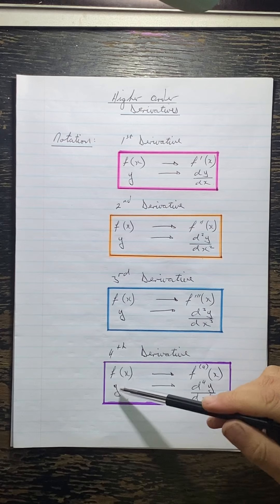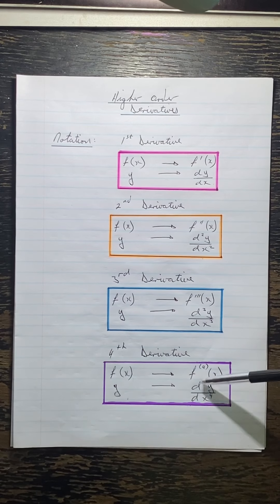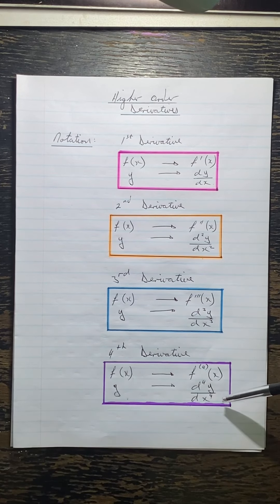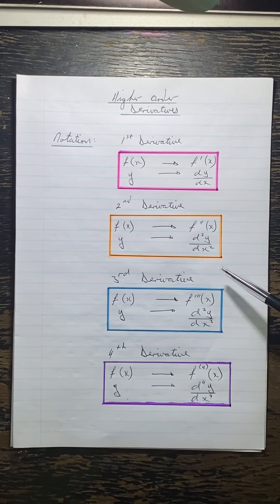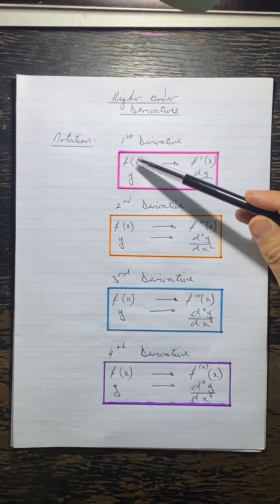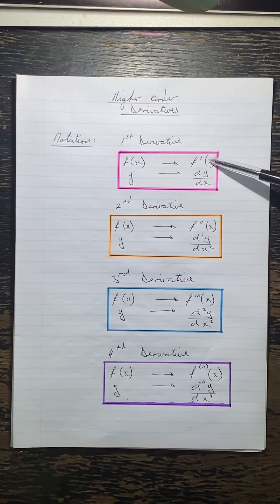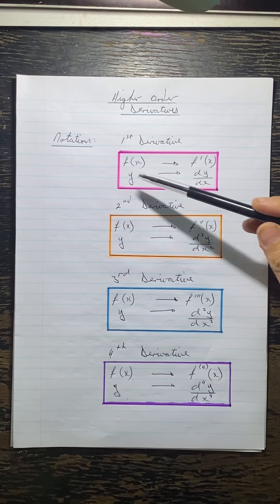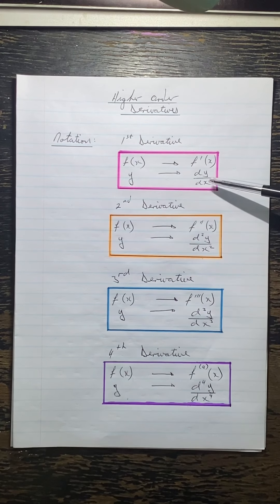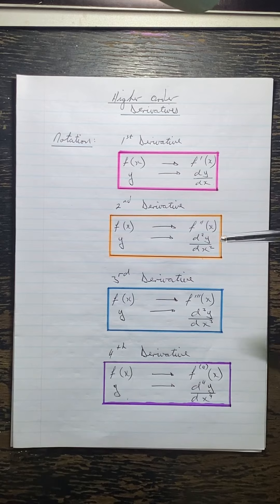If it's given in the y form, we write d to the 4 y by dx to the 4 — that's just the notation. Remember: if they give it in the f form, we must put the derivative in the f form; if they give it in the y form, we do it by dy/dx.